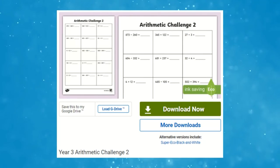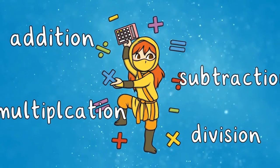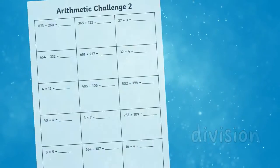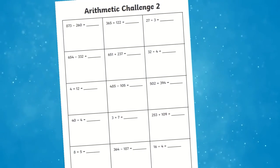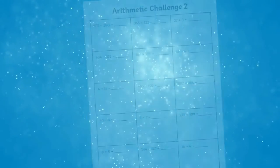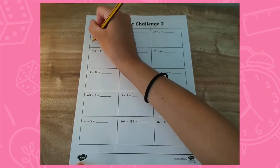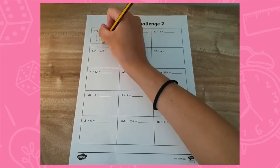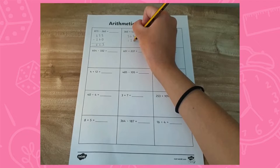Use this fantastic year three arithmetic to improve your children's confidence and fluency with the four operations. With a mixture of three-digit addition and subtraction questions, along with multiplication and division questions relating to the three, four, and eight times tables, children will enjoy practicing their calculation skills.